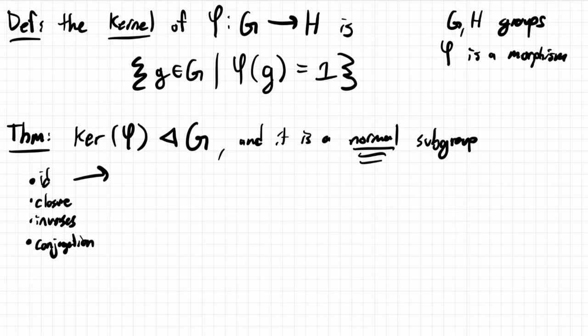To start the identity axiom, phi of one is going to be one, so one is in the kernel. That's what we want.